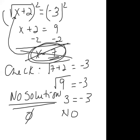Hopefully you can look at the problem ahead of time and see that it's a square root equal to a negative value — automatically, that's no solution, because you cannot take the square root of a number and get a negative value.